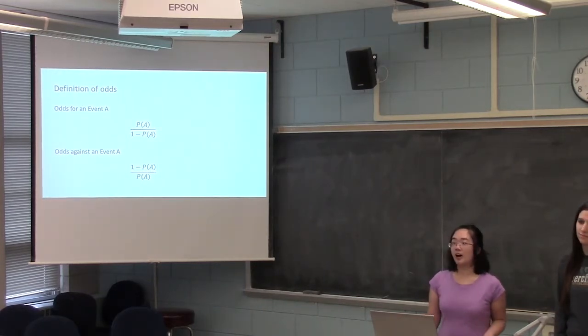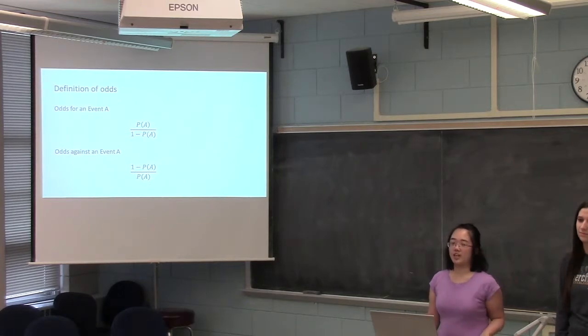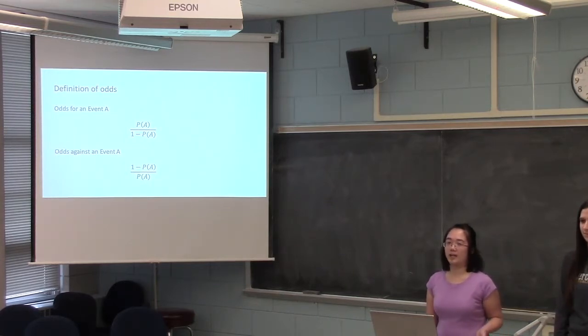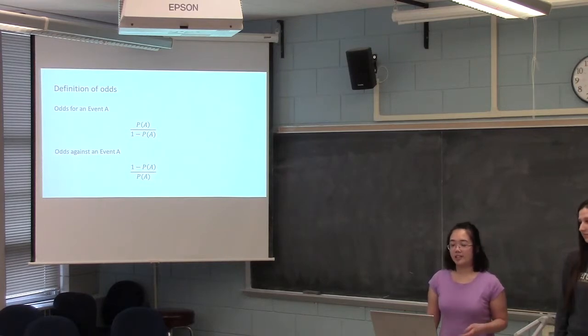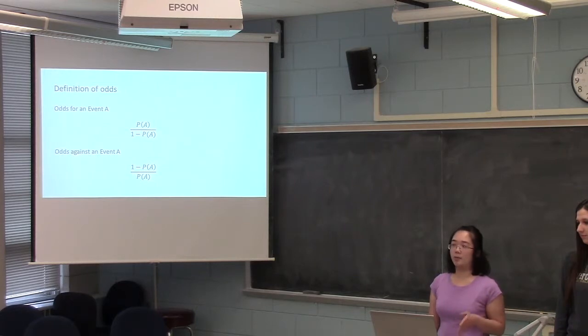First off, what are odds? Odds are a representation of the likelihood of an event, that an event will happen. So if you're calculating the odds for an event A, you'll take the probability of A and divide that by the probability of not A, so 1 minus the probability of A. And similarly for the odds against an event A, you'll take 1 minus the probability of A and divide that by the probability of A.